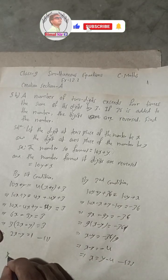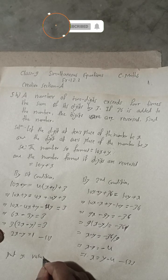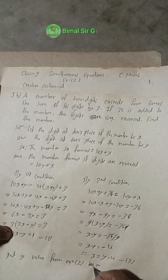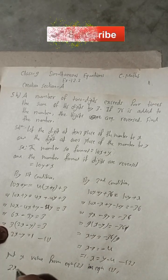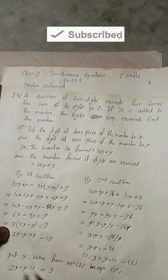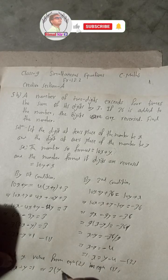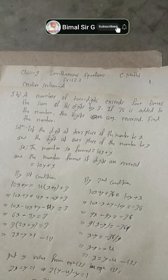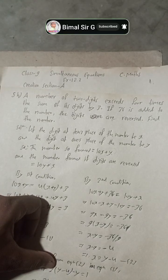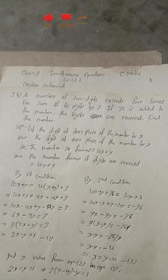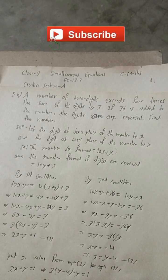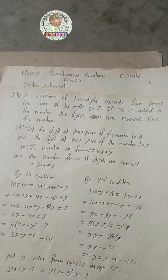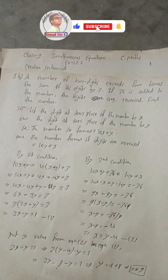Now put the x value from Equation 2 into Equation 1. Equation 1 is 2x - y = 1. Substituting x = y - 4: 2(y - 4) - y = 1, which gives 2y - 8 - y = 1, so y = 1 + 8 = 9. We get y = 9.